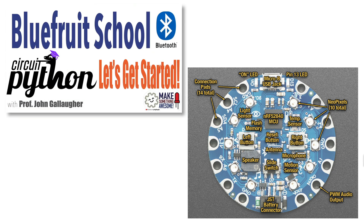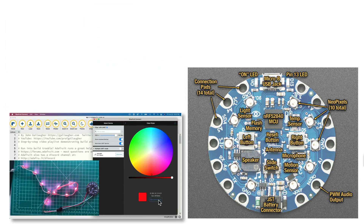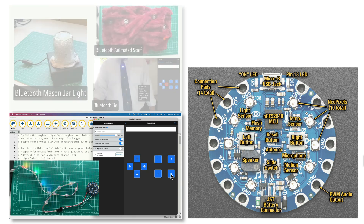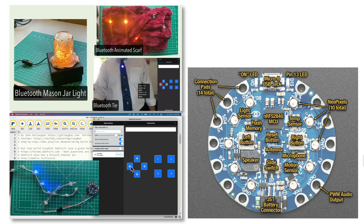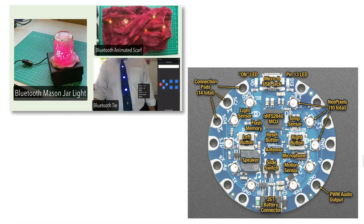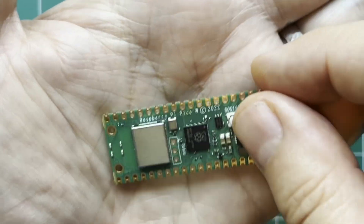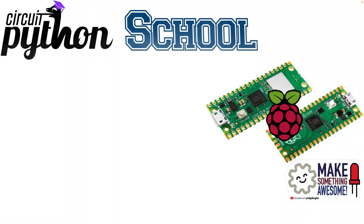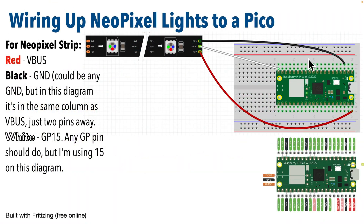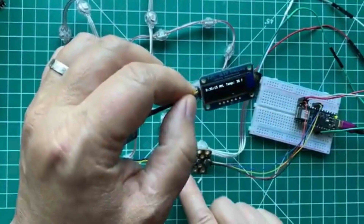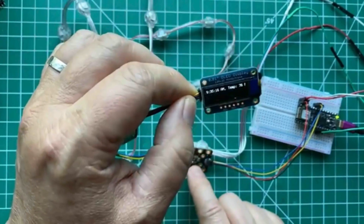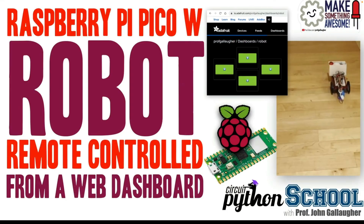Even cooler, the board supports Bluetooth, so you can use Adafruit's free Bluefruit Connect app on Android, iOS, or the Mac to remotely control your projects. Later in this course, we'll move to the $7 Raspberry Pi Pico W. It's a Wi-Fi-based board that will allow us to learn about wiring using a breadboard, and since it supports Wi-Fi, we'll also be able to use the board to learn about the Internet of Things.